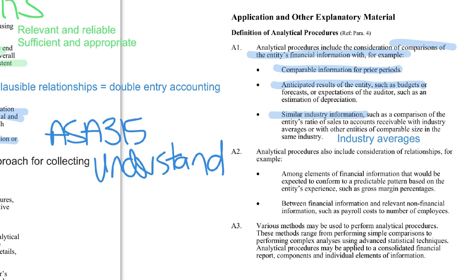Comparable information from prior periods is a common and pretty good comparison to use. There are some concerns with using anticipated results like budgets, because budgets can be manipulated — budgetary slack, or building cushion into the budget, might make comparing to a budget less useful. Industry averages can be good in certain circumstances depending on how similar your client is to other companies in the same industry; otherwise you might use averages from a smaller sample of firms closer to your particular audit client.